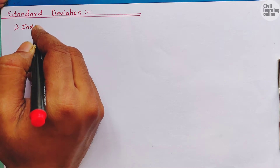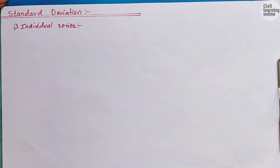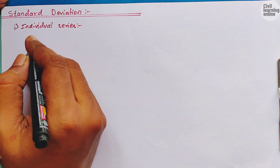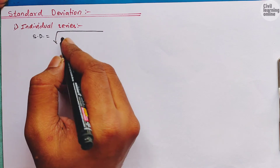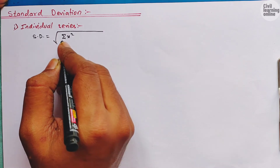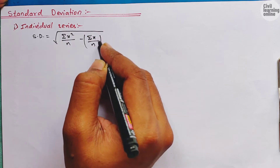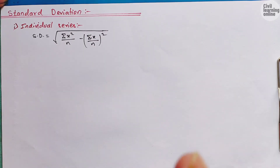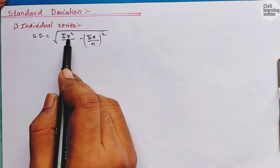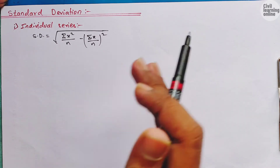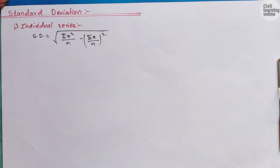The first series is individual series. For individual series, the formula for calculating standard deviation is: SD = √(Σx²/n − (Σx/n)²). Here x represents the marks, class, or items provided in the question, and n is the number of those marks. Individual series is a very simple type of question for calculating standard deviation.